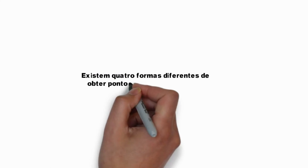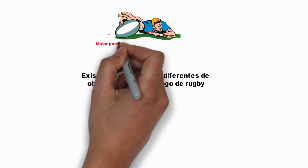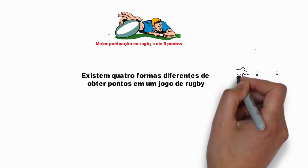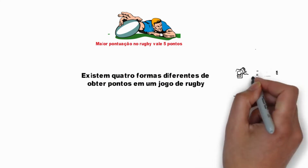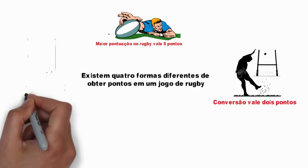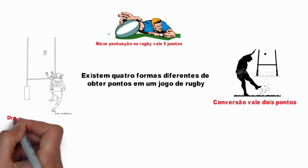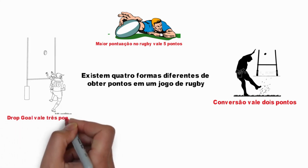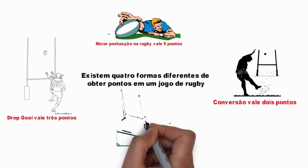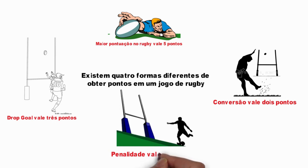Existem quatro formas de se obter pontos no rugby. O try, a maior pontuação do esporte, é marcado quando o jogador fixa a bola no chão na área denominada in-goal, valendo 5 pontos. A conversão, tentada após um try, acrescenta mais 2 pontos se a bola passar por cima das traves entre os postes. O drop goal, tentativa de chutar a bola por cima da trave ao longo da partida com a bola tocando o chão antes do chute, vale 3 pontos. No caso de uma penalidade, a equipe beneficiada pode chutar a bola em direção às traves, valendo também 3 pontos se convertida.